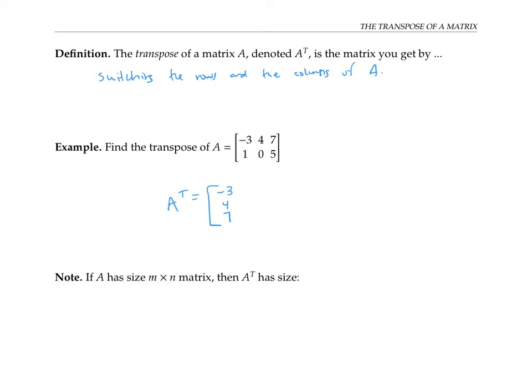And the second row of A becomes the second column of A transpose. In this example, notice that we started with a two by three matrix, but when we took the transpose, we got a three by two matrix.